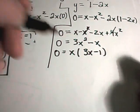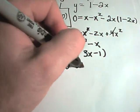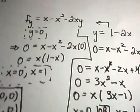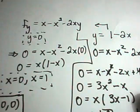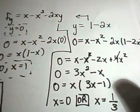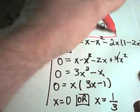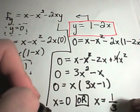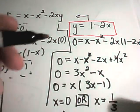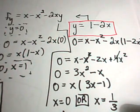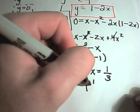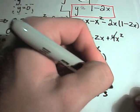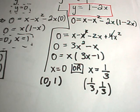This tells us that either x equals zero or x equals 1 third. But now we're plugging back into y equals 1 minus 2x. If we plug in x equals zero, we get y equals 1, giving the point (0, 1). If we plug in x equals 1 third, we get y equals 1 minus 2 thirds, which is also 1 third, giving the point (1/3, 1/3). So those are my four critical points to check: (0, 0), (1, 0), (0, 1), and (1/3, 1/3).